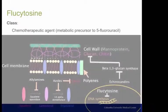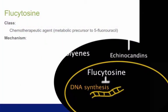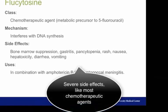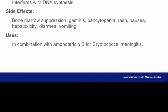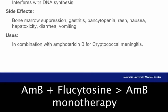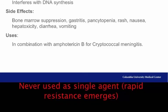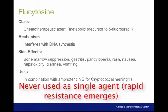Flucytosine, the precursor to 5-fluorouracil, is a chemotherapeutic agent that interferes with DNA synthesis. It has predictably severe toxicity. Because it has excellent penetration of the CNS, it is used in combination with Amphotericin B for treating cryptococcal meningitis. Dual therapy has been shown to improve mortality when compared with using Amphotericin B alone. Flucytosine is never used as a single agent, as rapid resistance occurs.